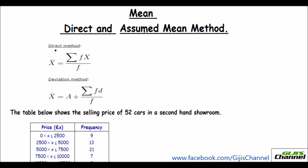I have already written the formula for the direct method and the deviation method. The assumed mean method can also be called the deviation method or indirect method. For the direct method, your mean value is equal to sigma f times x, that is fx divided by sigma f.